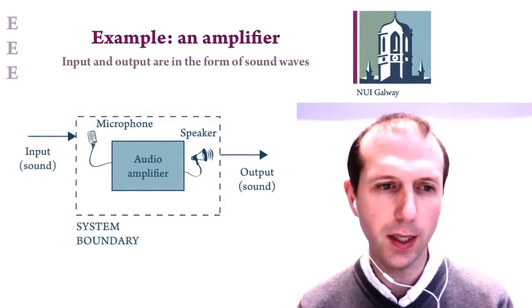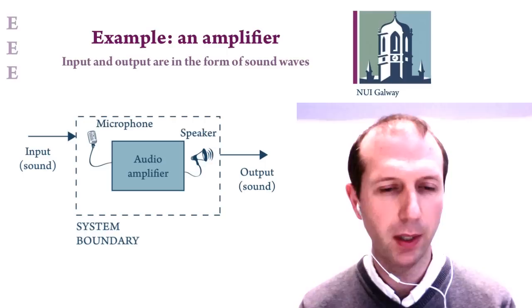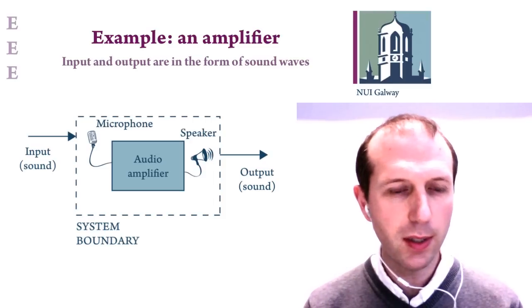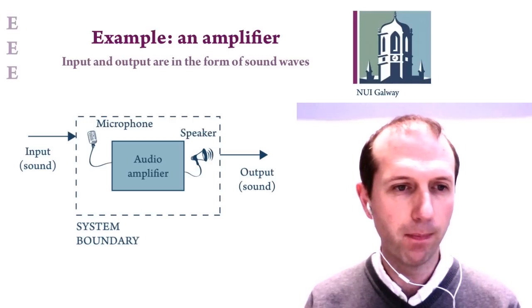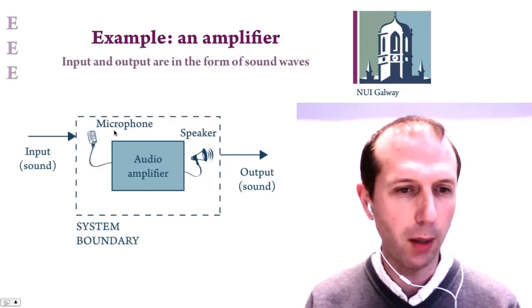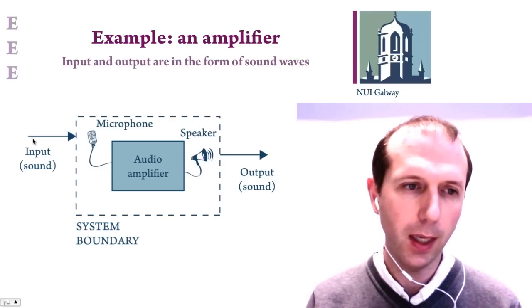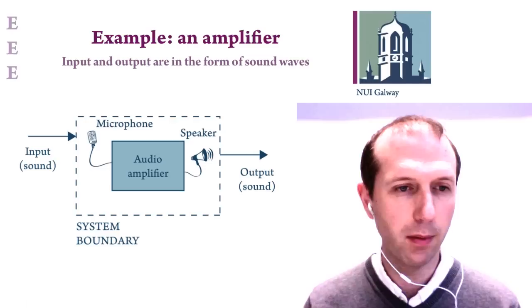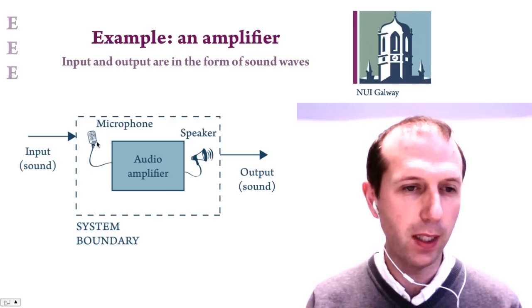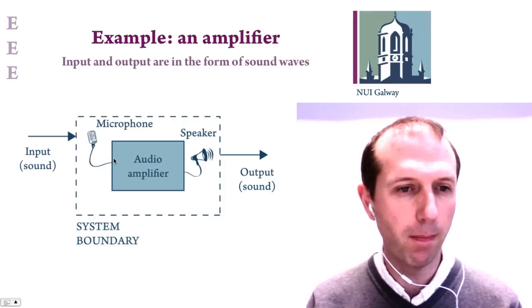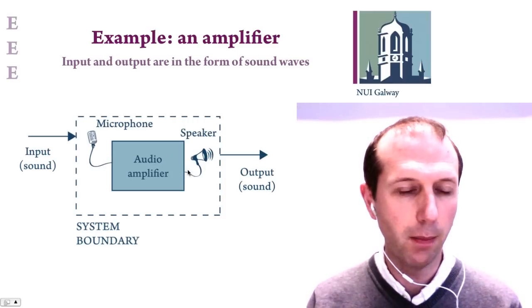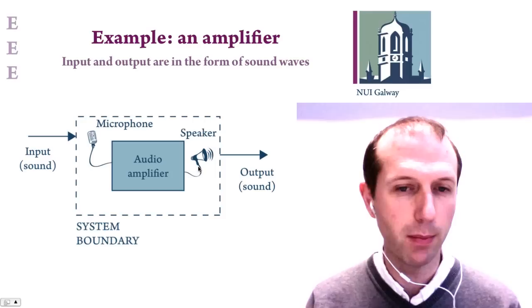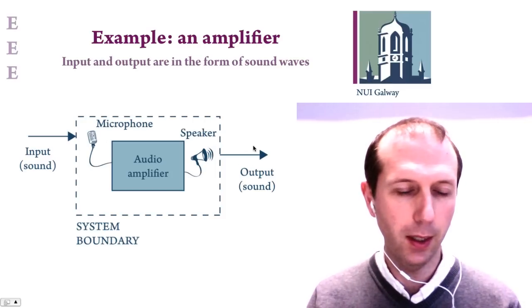Here's an example: an amplifier. An amplifier basically consists of some input that's amplified and sent to an output. In this picture, we've drawn the system boundary around the microphone, the speaker, and the audio amplifier itself. The input in this case is some kind of sound signal — I'm speaking into a microphone, which converts the sound waves into an electrical signal going into the audio amplifier, which then amplifies and sends it out through a speaker, converting the electrical signal back to sound waves. So the input and output to the system are both sound.